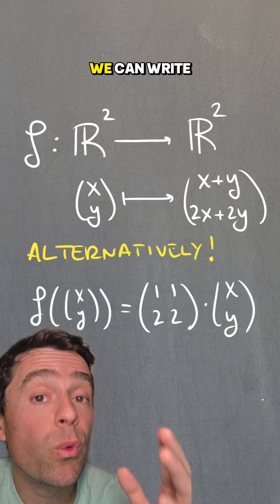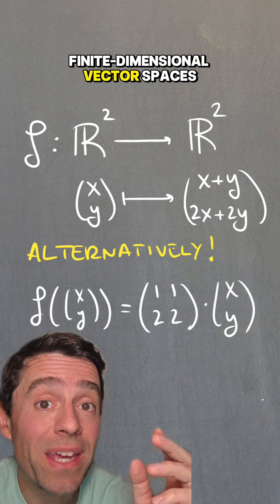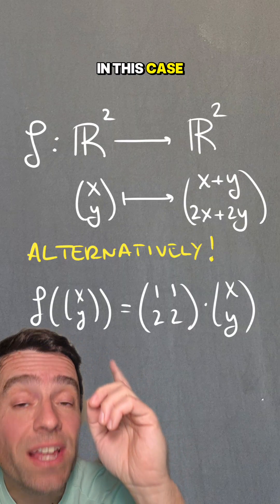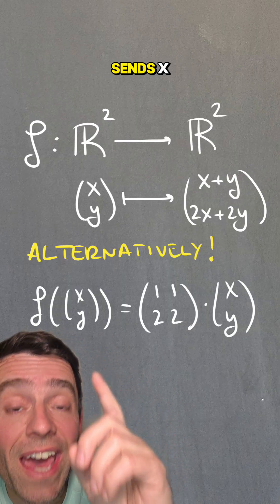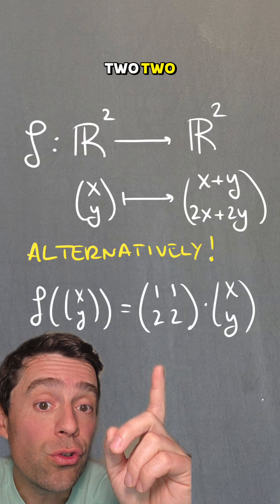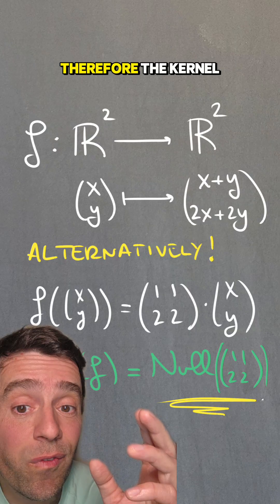Alternatively, we can write linear maps between finite dimensional vector spaces in terms of matrix multiplication. In this case, this map is the map that sends (x,y) to the matrix [[1,1],[2,2]] multiplied by (x,y).